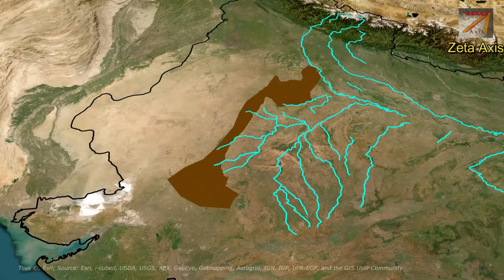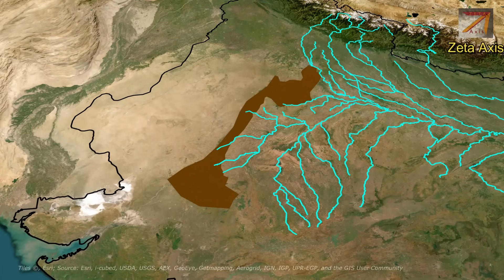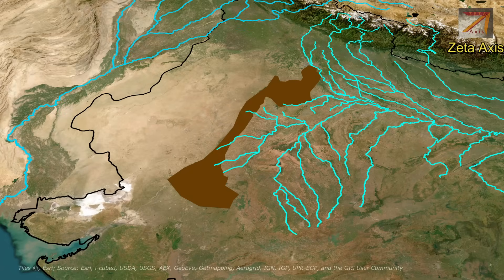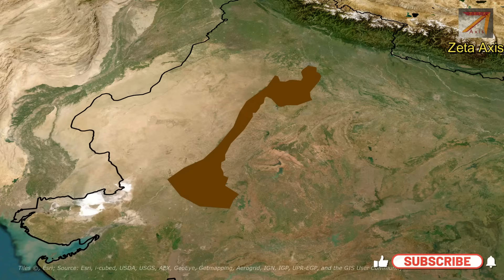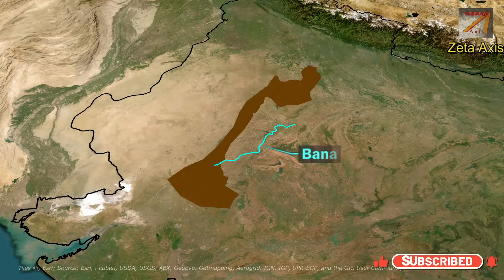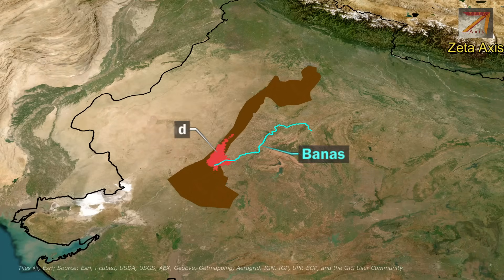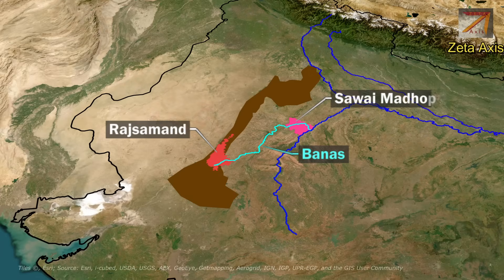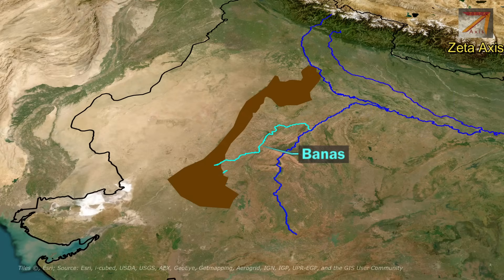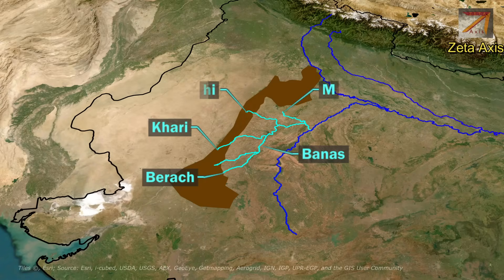The Aravalli range also forms a watershed between the Ganga river system on the east and the Indus river system on the west. The Aravalli range is a source of important rivers flowing through central India. The Banas river originates on the eastern slopes of the Aravalli from Rajasthan and flows west to meet the Chambal river in Sawai Madhopur. Many tributaries of the Banas river, like the Berach, Khari, and Morel, also originate from the Aravalli hills.